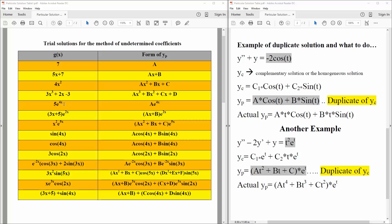5e raised to 4x. We would say ae raised to the 4x. 3x plus 5e raised to 2x, we would get ax plus b, e raised to 2x. x squared times e raised to 5x, and so we say ax squared plus bx plus c, we focus on the x squared on the inside, times e raised to 5x.